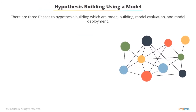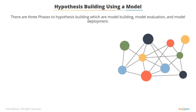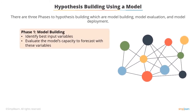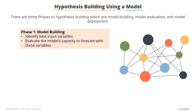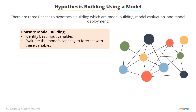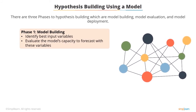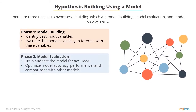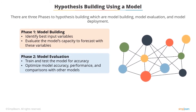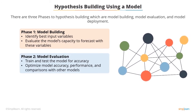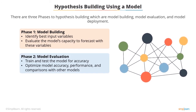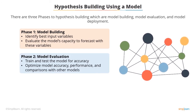Hypothesis building using a model has three phases. The first phase is model building, which comprises identifying the best input variables for the model and judging if the model can predict the outcome for the given input. The second phase is model evaluation — a phase in which you train and test the model, changing different parameters used in the model, aiming for accuracy.